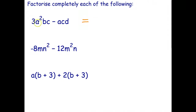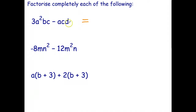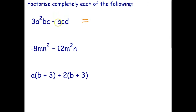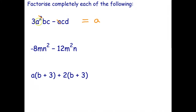Let's have a look at the first term. It's got a factor of three, two factors of A, a factor of B, and a factor of C. The second term has a factor of A, a factor of C, and a factor of D. There's no common numerical factors. There are two factors of A in the first term and one factor of A in the second, so I can take out one factor of A. B is only in the first term, so B is not a common factor. There's a factor of C in each term, so that's part of the common factor. D is only in the second term, so that's not a common factor. So the highest common factor is AC.